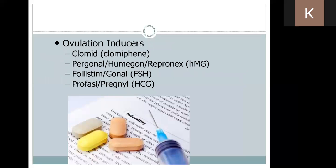If a patient comes in purely complaining of infertility and wishes to get pregnant, we can focus on helping them ovulate. We call it ovulation induction. The most common drug used is clomiphene. A lot of the time we combine ovulation induction with metformin. Research shows that using these combinations — ovulation induction, metformin, and lifestyle changes — is usually sufficient to help patients get pregnant.